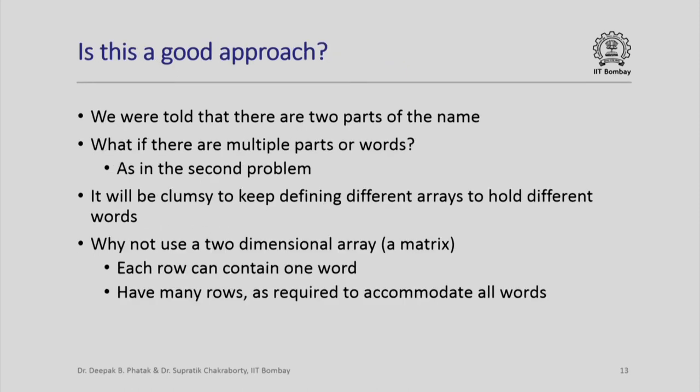Is it a good approach? Well, yes, we were told that there are two parts of the name and therefore first name and last name we just assign them to two different arrays. But what if there are multiple parts? As in the second problem, you remember second problem says given a sentence containing multiple words separated by each other from one or more spaces, get them out into separate arrays or separate strings. Now, it will be very clumsy to keep defining different arrays to hold different words.